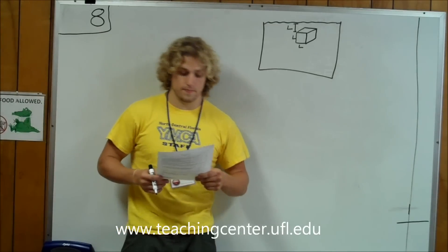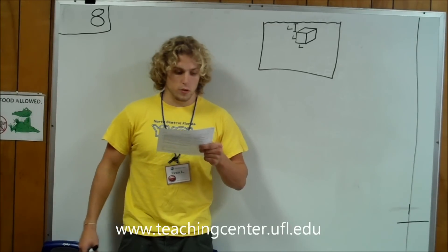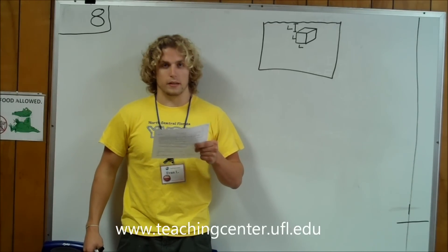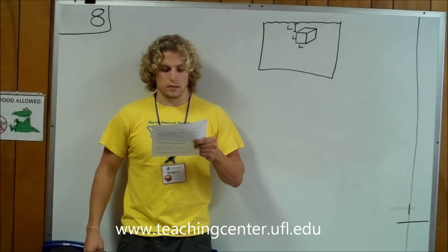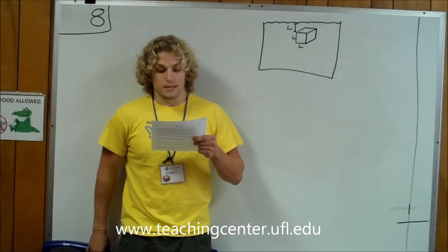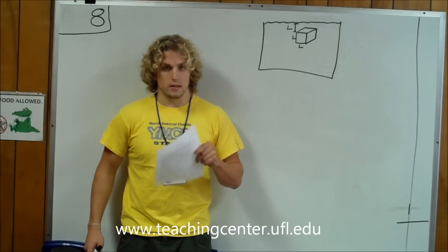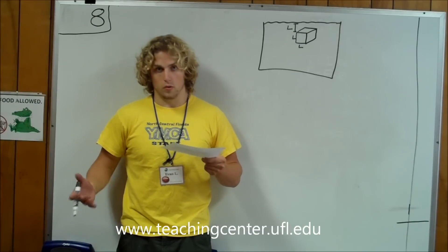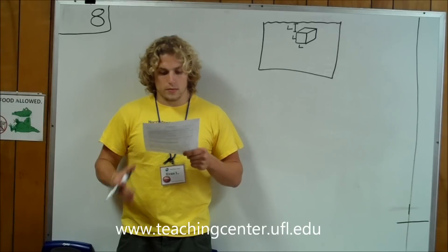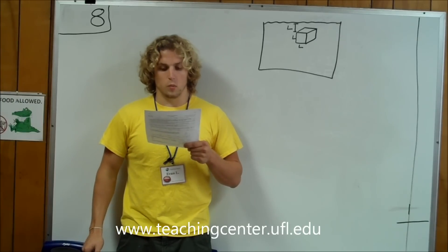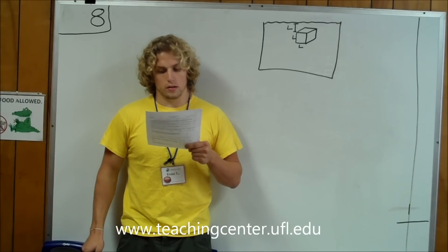Question number 8. A cube of wood with each side of length L is placed horizontally so that the top surface is a distance L under water of density rho W. What is the force due to the water pressure on one vertical side of the cube? Do not include the effect of the air pressure on top of the water.